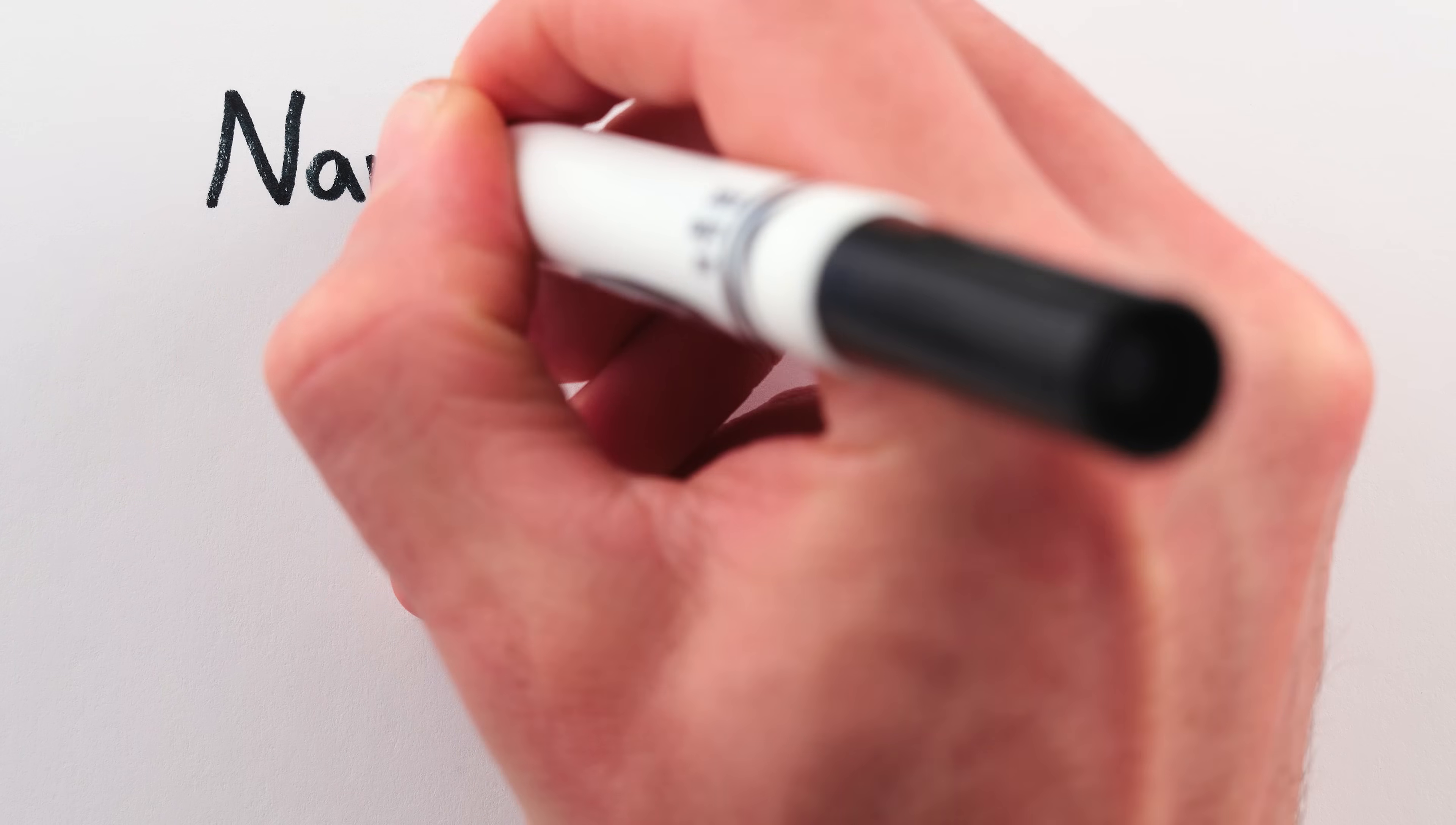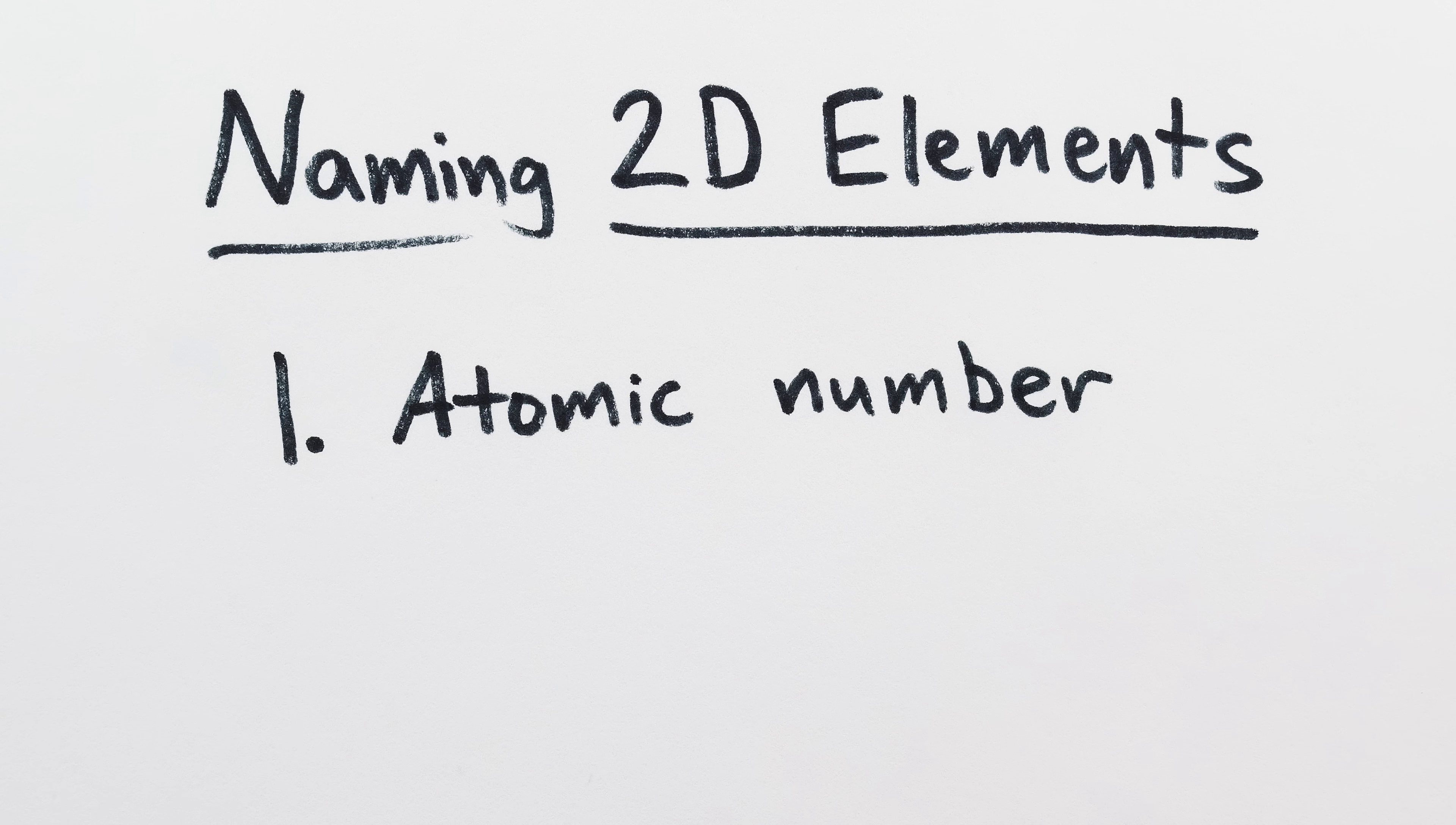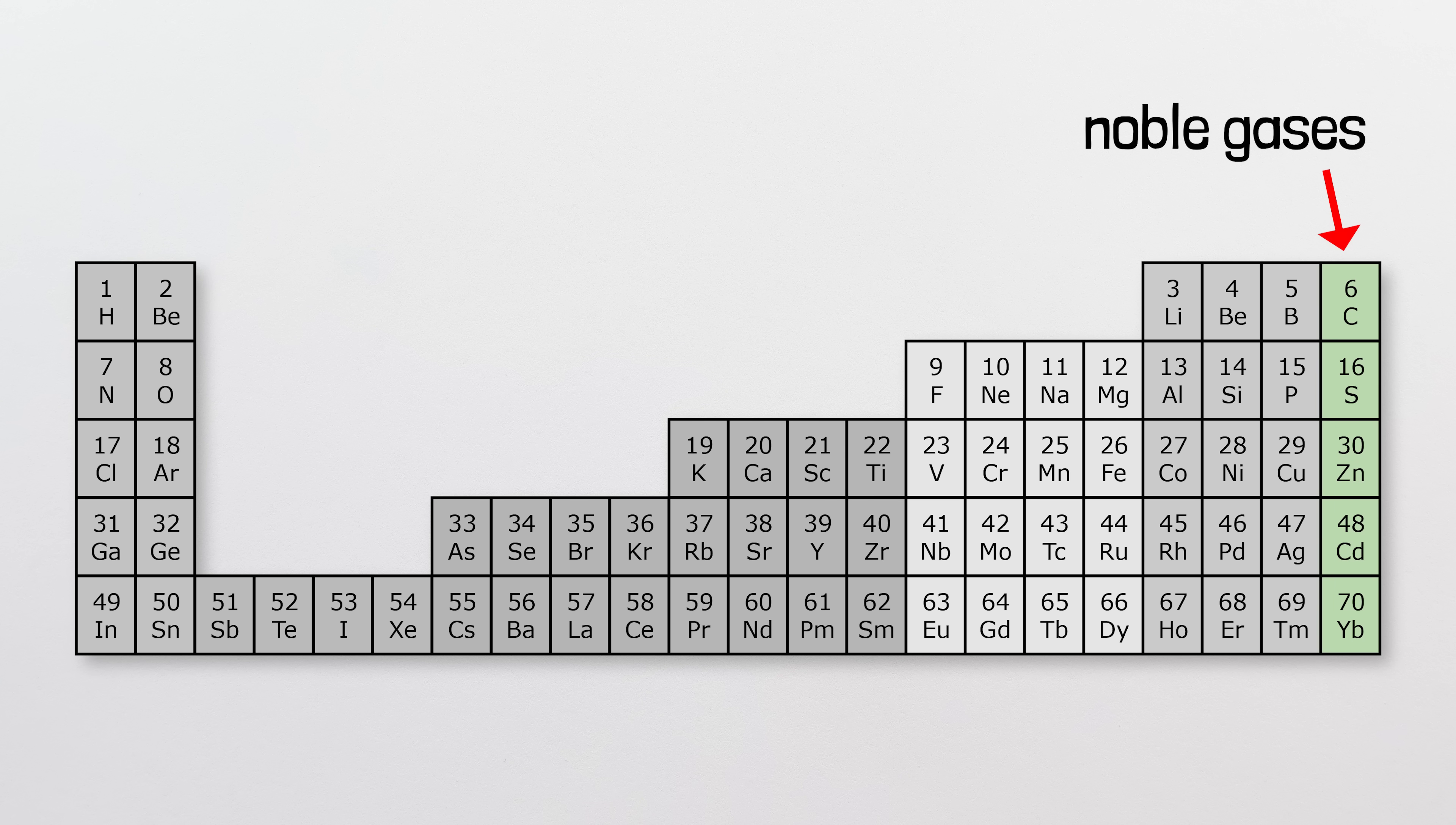But it's definitely different. There are two ways we might name the 2D elements. We could use the same names as the 3D ones with the same number of protons and electrons, so that carbon, sulfur, zinc, and cadmium would be the names of the 2D noble gases, and the 2D halogens, which in 3D are fluorine, chlorine, etc., would be instead boron, phosphorus, copper, silver, etc.